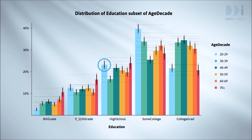The high percentage with high school compared with everyone except the 70 and over group — only supported for about half of the other groups. The high percentage with 9 to 11th grade compared with everyone except the 70 and over group — not supported for any of the comparisons because of overlap with all other comparison intervals.